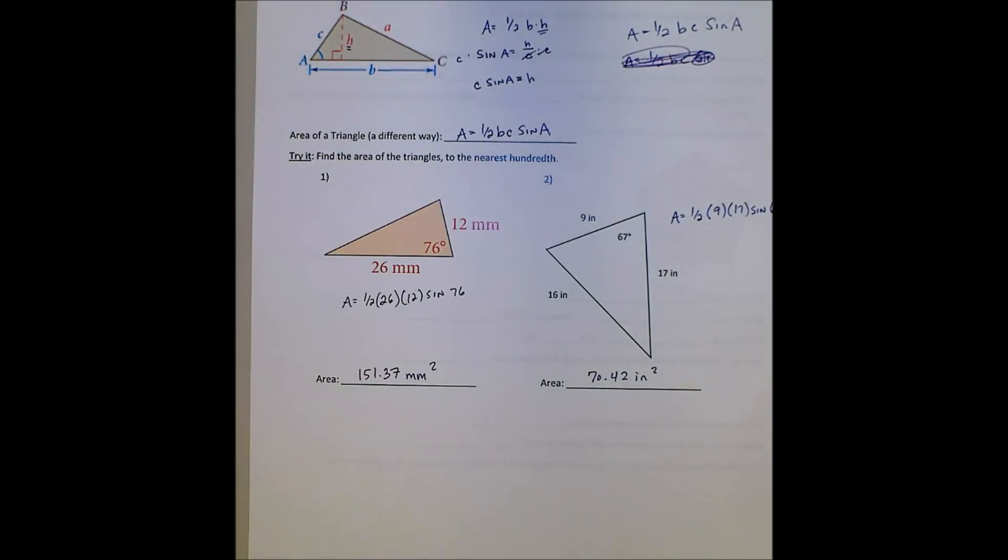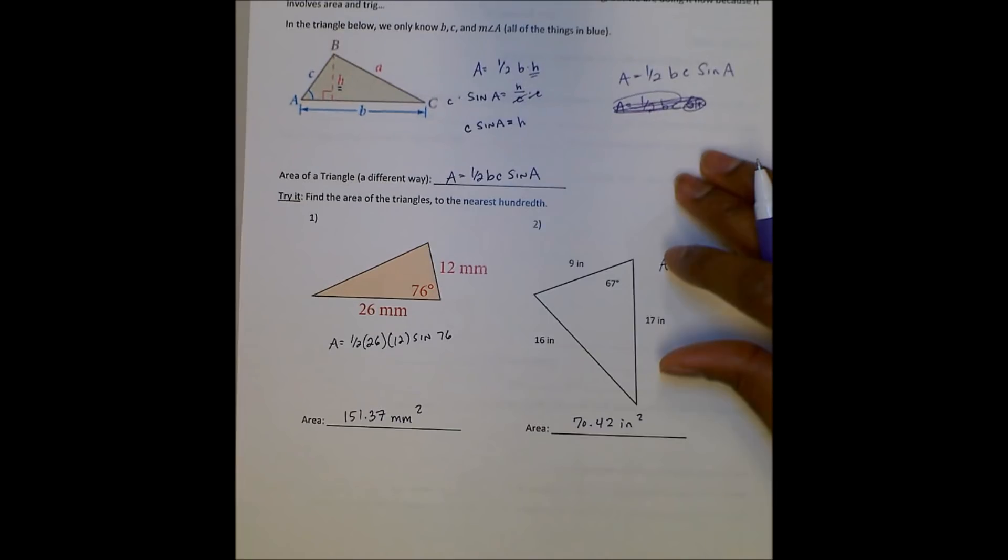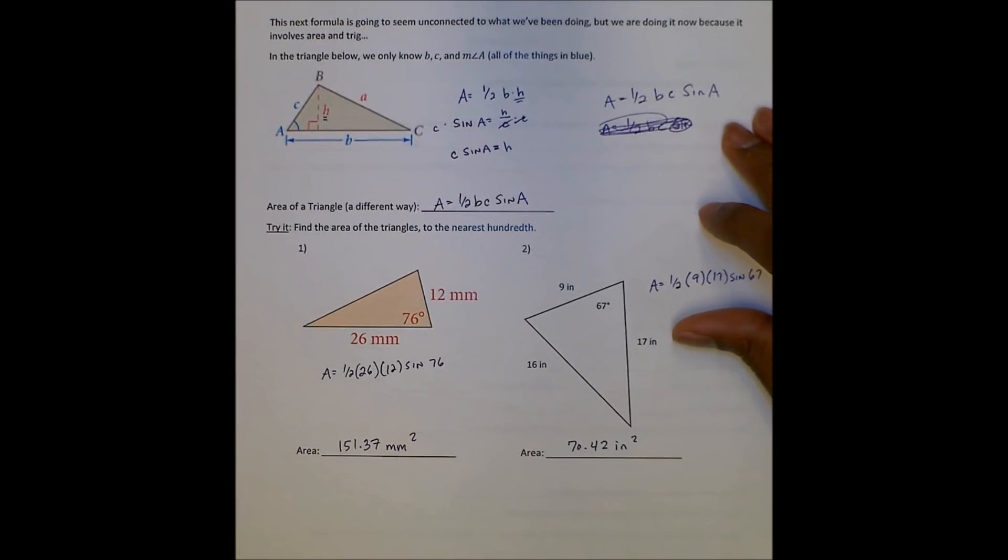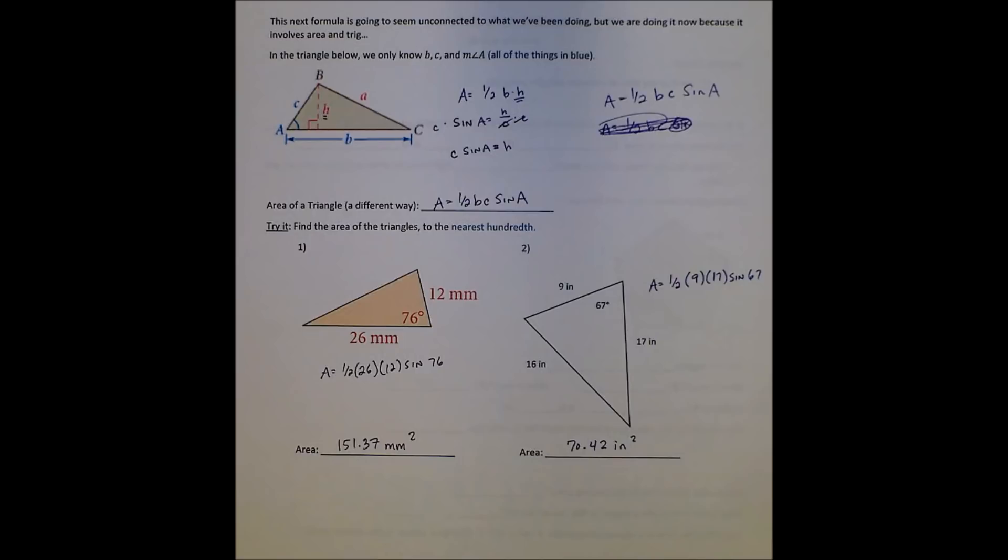All right, so we talked more about finding the area of regular polygons using the 1 half apothem times perimeter equation. And then we also talked about trying to find an area of triangles in a different way using 1 half B, C, sine A. All right, see ya.